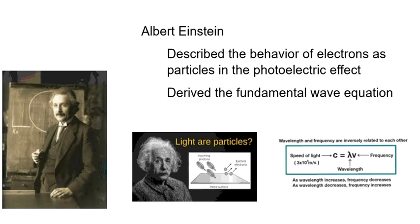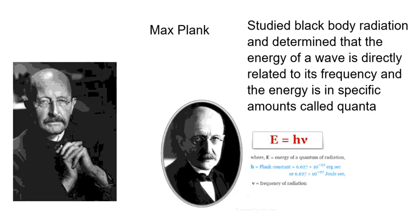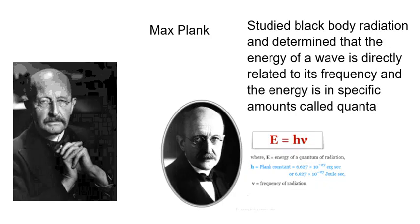And that is Max Planck. He studied black body radiation and determined that the energy coming off the wave of light that comes off a black body is related directly to its frequency, and the energy comes off in specific amounts called quanta. Now, black body radiation could be an incandescent light bulb, a piece of tungsten that glows when it's heated.